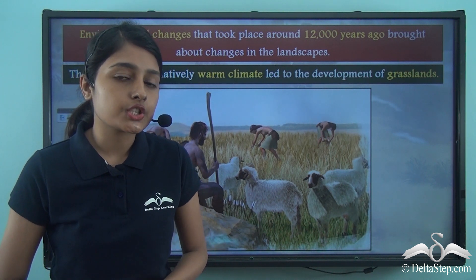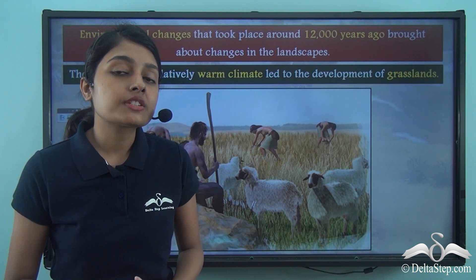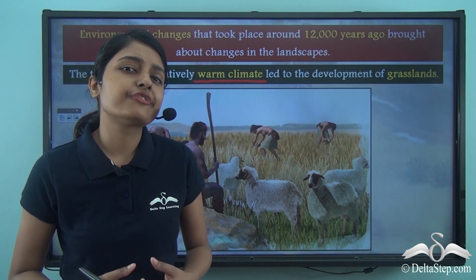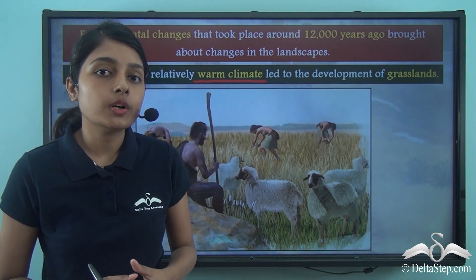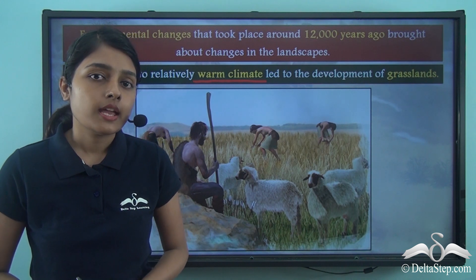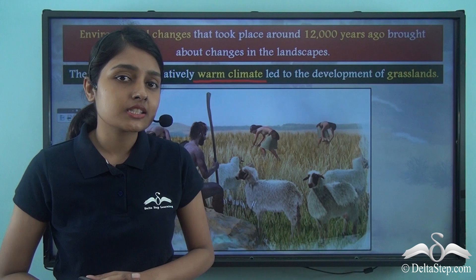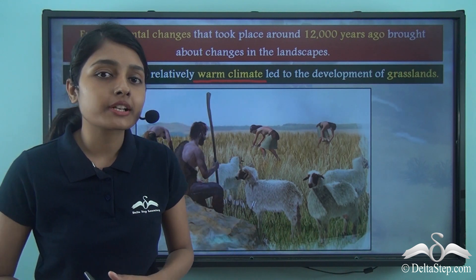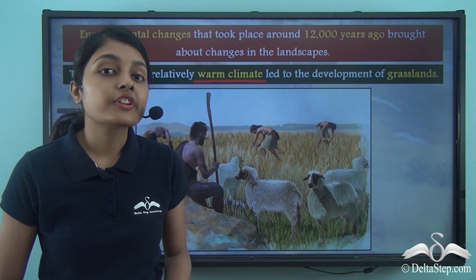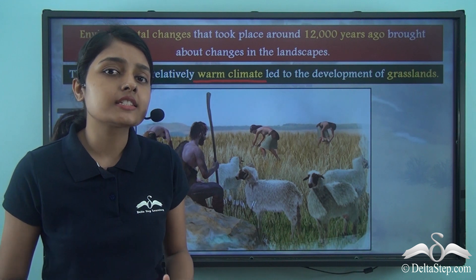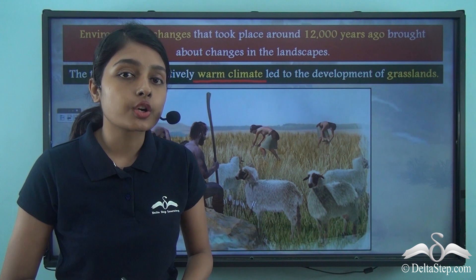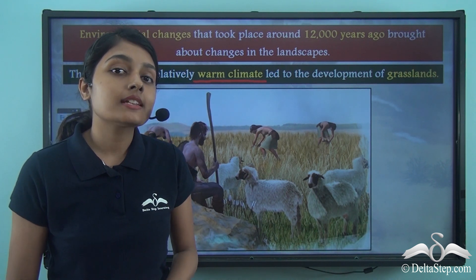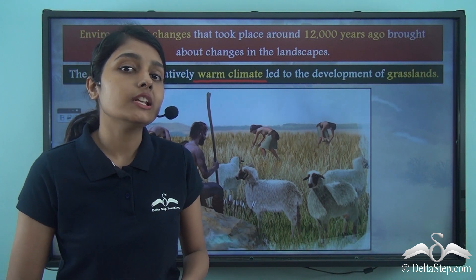Because of these environmental changes, the world slowly witnessed a transition to a warm climate. Previously, most places in the world were very cold, but around 12,000 years ago these places were slowly getting warmer. Because of this transition to warmer climates, the world saw the growth of vegetation — forests, grasses, and different kinds of greenery — which also shaped and changed the lives of human beings living back then.